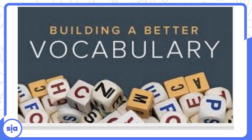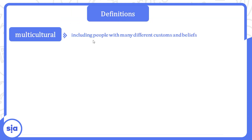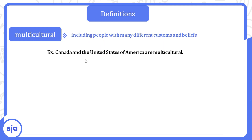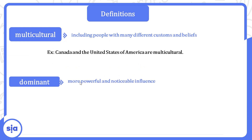Let's move to the vocabulary part. The first word is 'multicultural.' It means including people with many different customs and beliefs — الناس لما يكونوا ليهم عادات ومعتقدات مختلفة، ده يبقى متعدد الثقافات. Canada and the United States of America are multicultural — فيهم ناس من ثقافات كتيرة.